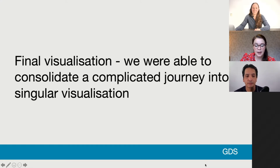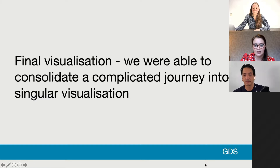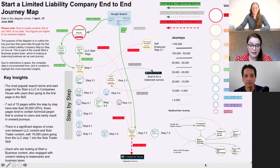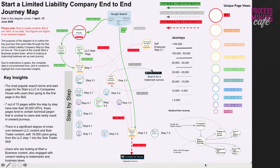In terms of the end product of this analysis, we were able to consolidate an extremely complicated journey into a singular visualization combining key insights from Disco process mining and more traditional Google Analytics analysis. Each step in the step-by-step is color-coded and weighted to reflect each step's popularity, as well as summarizing the main routes in (green arrows) and routes out (red arrows). It also covers key insights and recommendations, with a final visualization of what an idealized journey would look like.